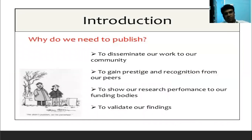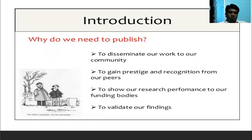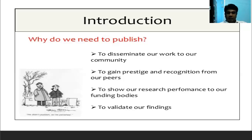Why do we need to publish? First, to disseminate — that is, spread — our work to the community. Second, to gain prestige and recognition from our peers. While publishing a research journal, we gain recognition from higher authorities. When committees like NAAC or NBA inquire, they ask how many papers you have published. If you say you have published 10 Scopus papers, A1 journals, and papers in Elsevier and Springer, your efficiency is automatically highlighted.